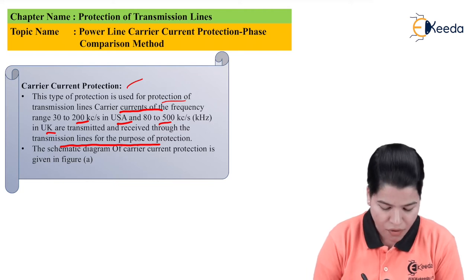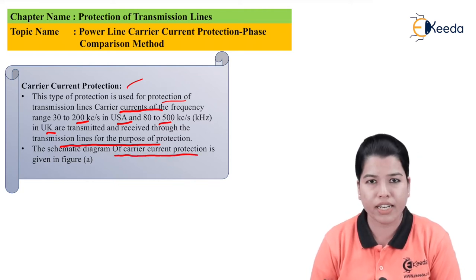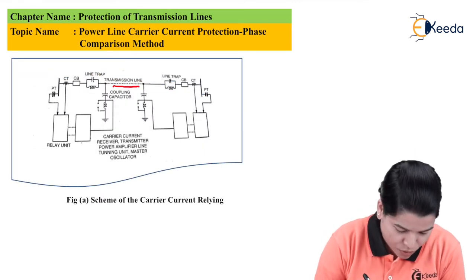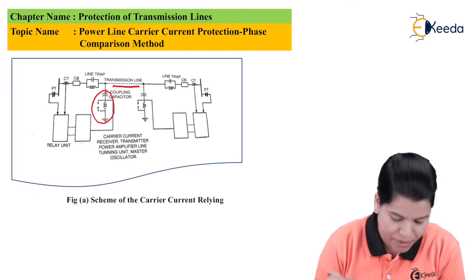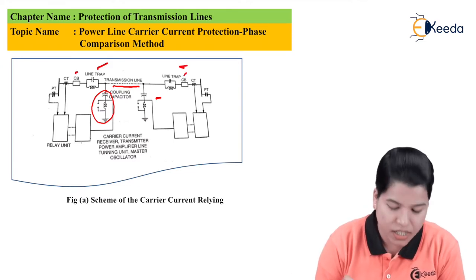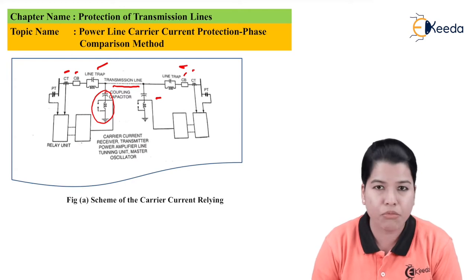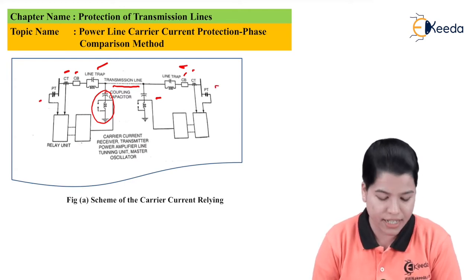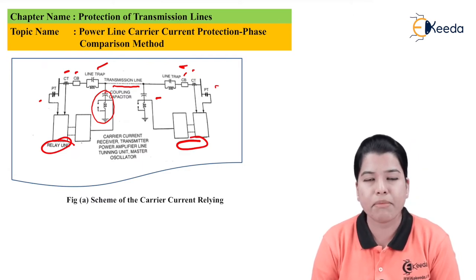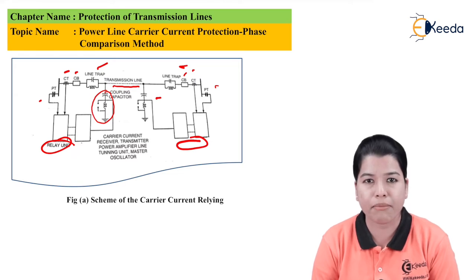The schematic diagram of the carrier current protection scheme is as shown in figure A. Here we have the transmission line which is to be protected. There is a coupling capacitor at both sides, then line trap at both sides, circuit breakers at both sides, CTs at both sides, and PTs at both sides. Similarly there is the relay unit. Whatever equipment is connected at the incoming side, the same equipment is connected at the outgoing side, and they should operate simultaneously so that the transmission line can be properly protected.